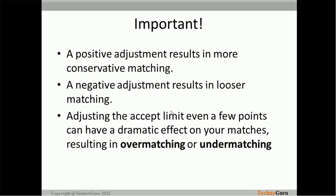Important: if you make a positive adjustment to the accept limit, it will result in conservative matching — fewer matches will be found. If you use negative numbers, it will be looser matching, and more matches will be found. Adjusting the accept limit even a few points — for example, changing from two to three — will have a dramatic effect on match results.